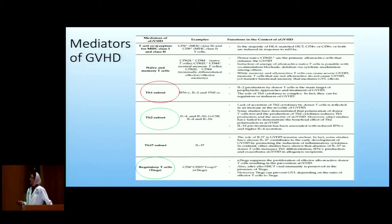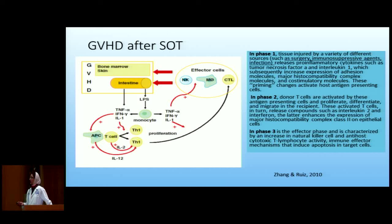These are some of the mediators of GVHD. I want to talk about T-helper-1, T-helper-2, and T-regs. I put T-helper-1 in red because it's bad for graft-versus-host disease — all these cytokines will cause more acute GVHD. However, T-helper-2 is, at least for acute GVHD (not chronic), kind of a good thing. And T-regs suppress the process of acute GVHD.